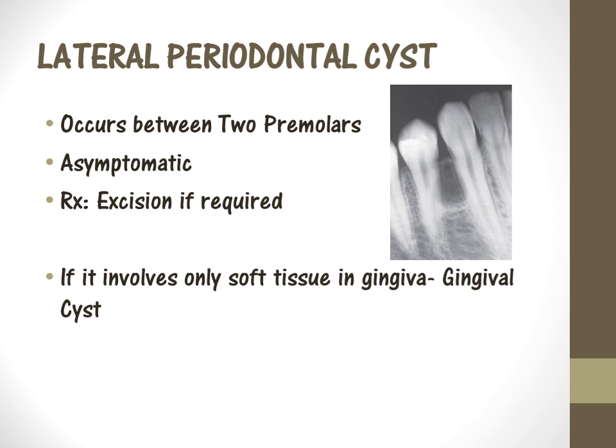The next cyst we are going to discuss is the lateral periodontal cyst. This type of cyst usually occurs in between the premolars. You will have extraoral enlargement and in the radiograph you will notice a radiolucency between two premolars. These are usually asymptomatic and do not cause any problems. If they give symptoms or enlargement, then you can excise the cyst. If this type of cyst occurs in the gingiva — where you have a gingival swelling but no radiographic changes — then it is called a gingival cyst.